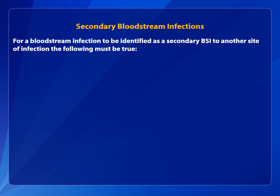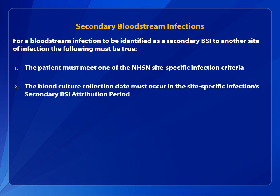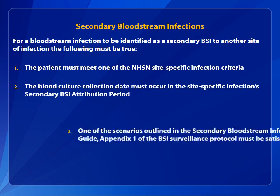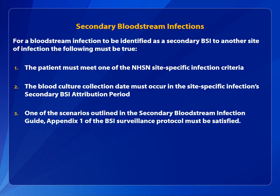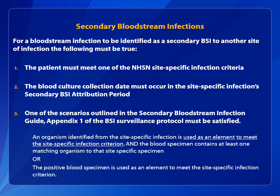First, the patient must meet one of the NHSN site-specific infection criteria. Second, the blood culture collection date must occur in the site-specific infection's secondary BSI attribution period. And third, one of the scenarios outlined in the secondary BSI guide found in Appendix 1 of the BSI protocol must be satisfied — either an organism identified from the site-specific infection used as an element to meet the criterion must have at least one matching organism found in the blood specimen, or the positive blood specimen must be used as an element to meet the site-specific infection criterion.